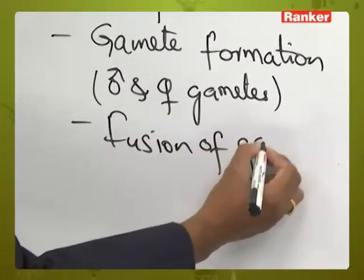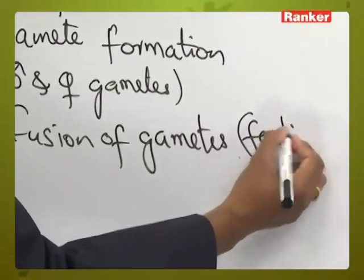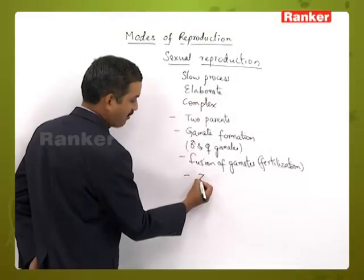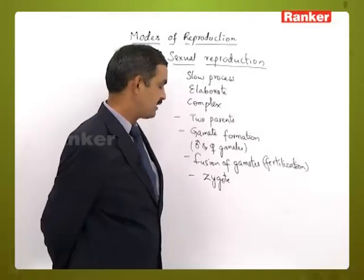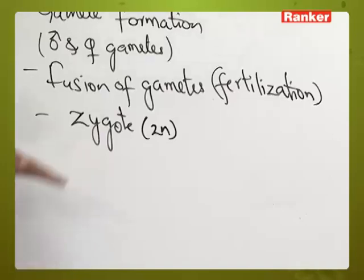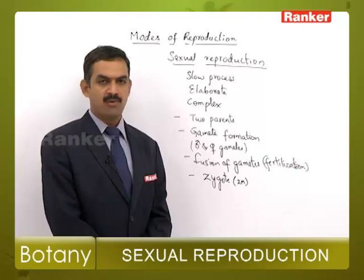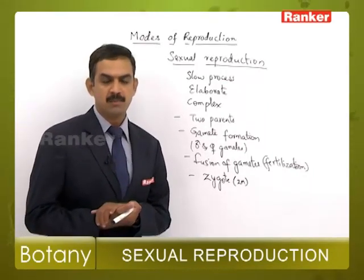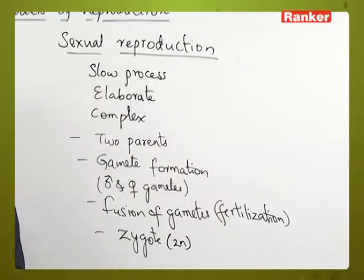Fusion of gametes takes place, which is what we call the fertilization process. After the formation and fusion of gametes, a zygote will be formed. This zygote is generally diploid in condition. Depending upon the ploidy of the parent, the zygote may undergo mitosis to produce the diploid organism, or if the parent is haploid, the zygote will undergo meiosis to produce the haploid organism.